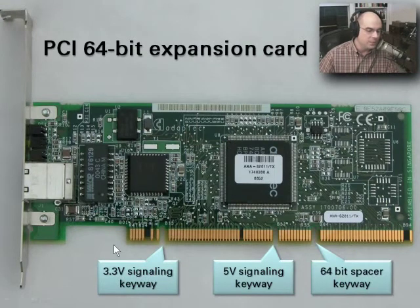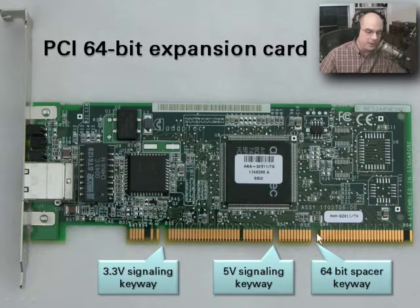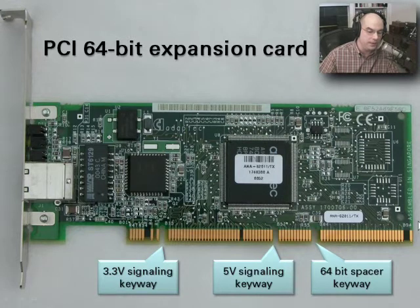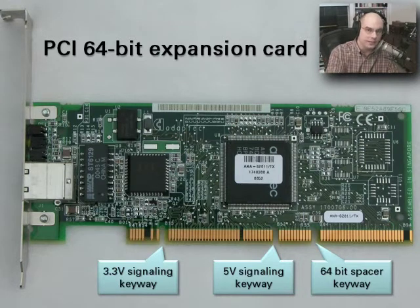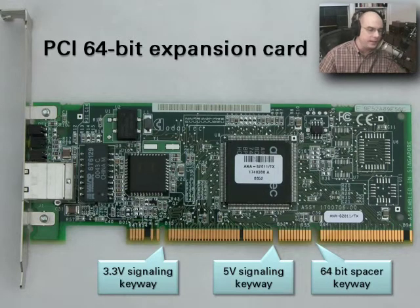In a 64-bit card, it's almost exactly the same way. The 3.3 volt keyway is in exactly the same place, and the 5 volt keyway is in exactly the same place. There's a big spacer for the 64-bit card that pushes it out to the other side. Most 64-bit cards can also be put into a 32-bit slot — it won't run at 64-bit, only 32-bit bandwidth. If you have a 64-bit slot available, make sure you use it.